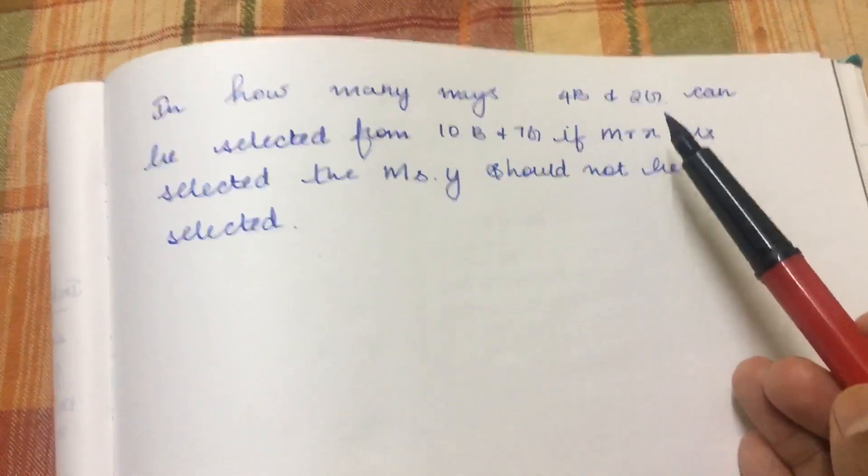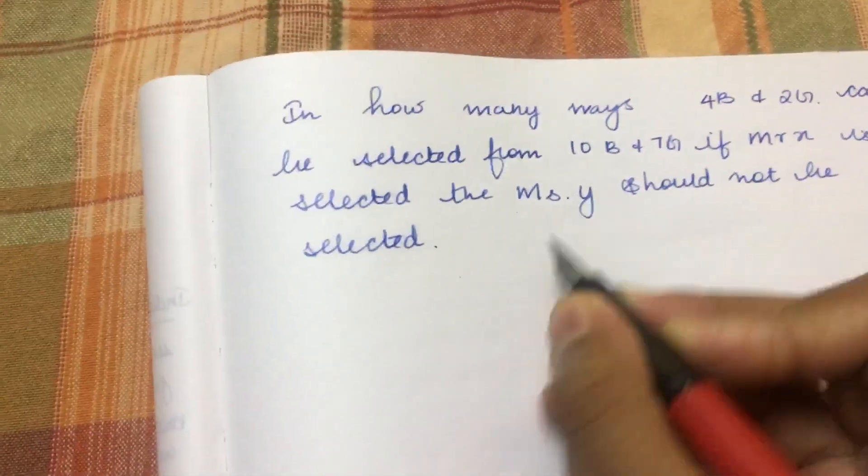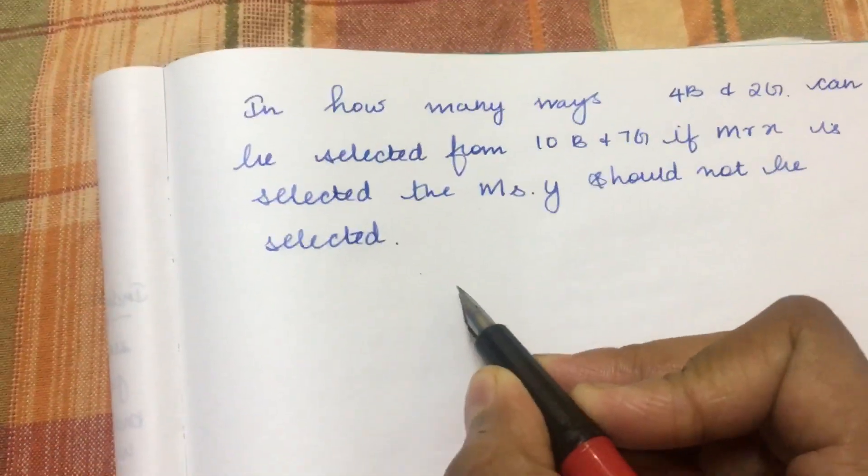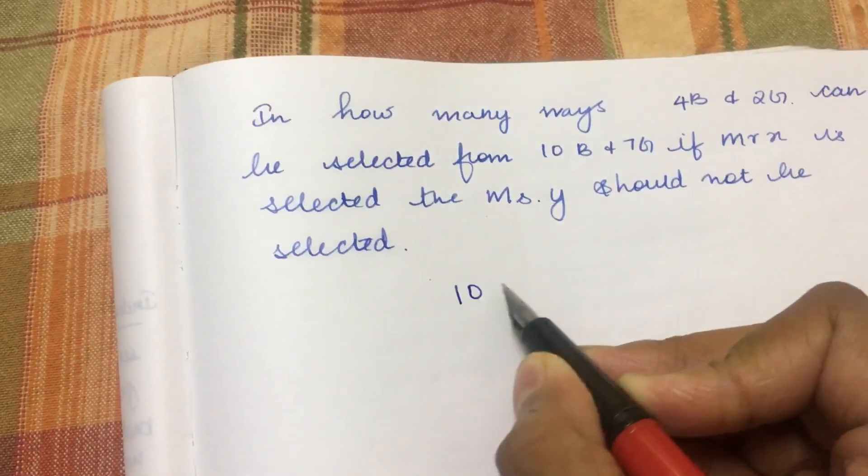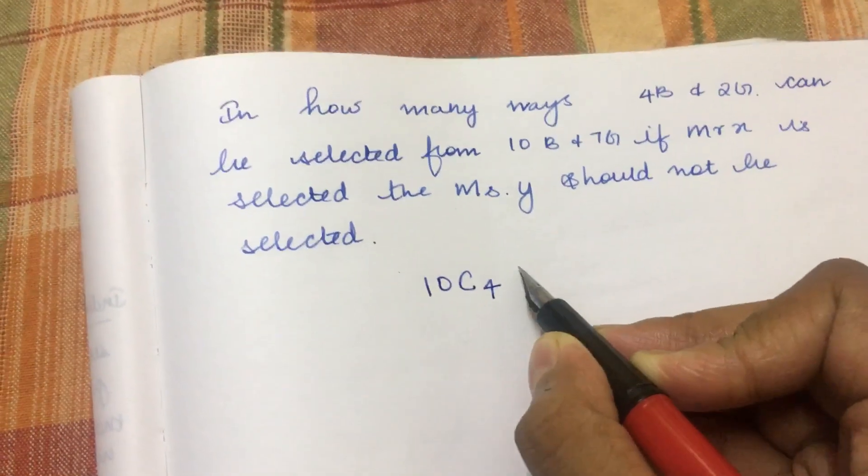If the boy is Mr. X then the girl Miss Y should not come. So for this shortcut method, first consider the total number: 10 boys are there, select 4 boys. For girls, 7 girls are there, select 2 girls.